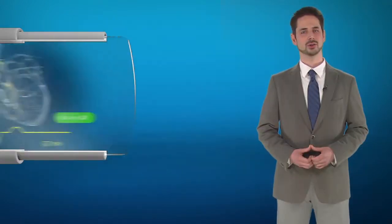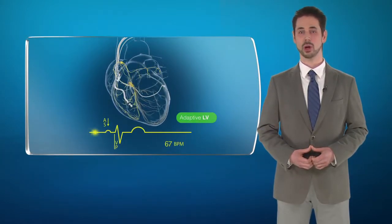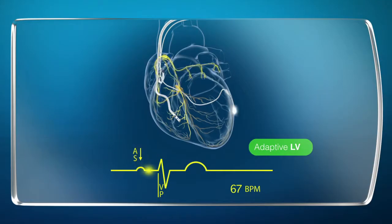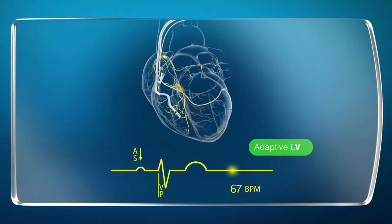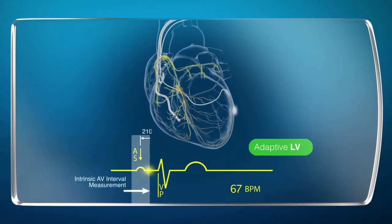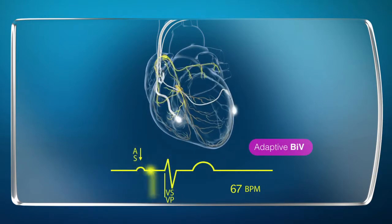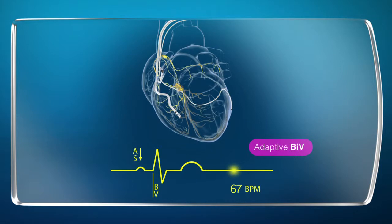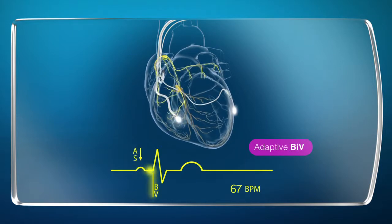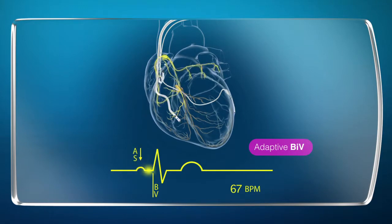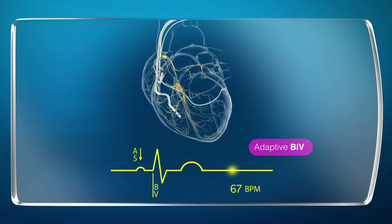If AV conduction is normal and heart rate is below 100 beats per minute, Adaptive CRT provides LV pacing that is synchronized to preempt intrinsic ventricular conduction. Otherwise, Adaptive CRT provides biventricular pacing that is applied after the end of the p-wave but before intrinsic ventricular conduction. Interventricular delay is adjusted to provide left ventricular pre-excitation in patients with better preserved conduction.